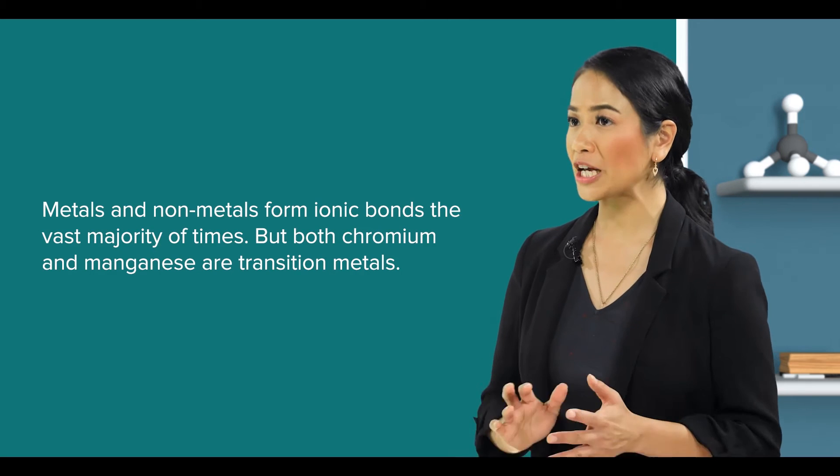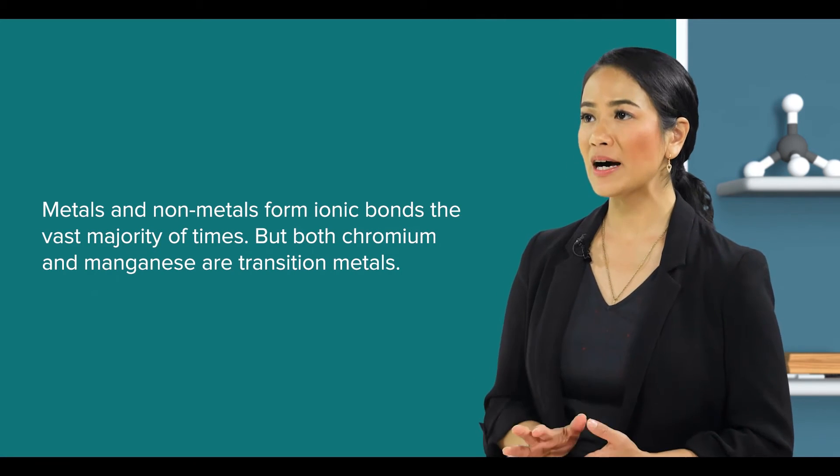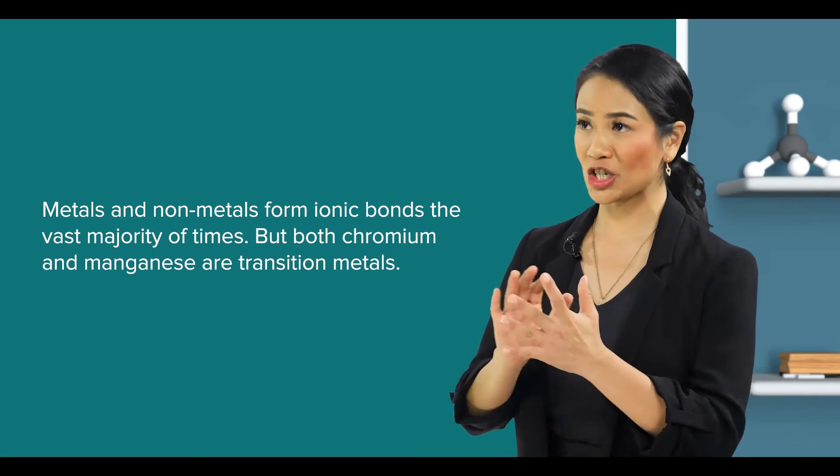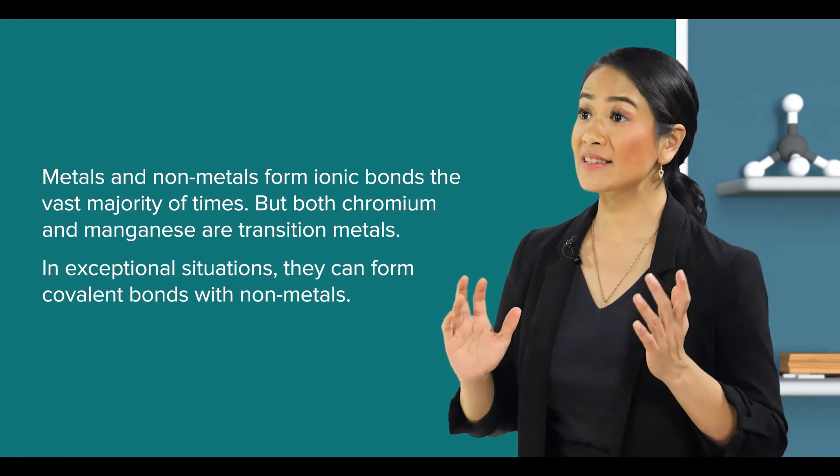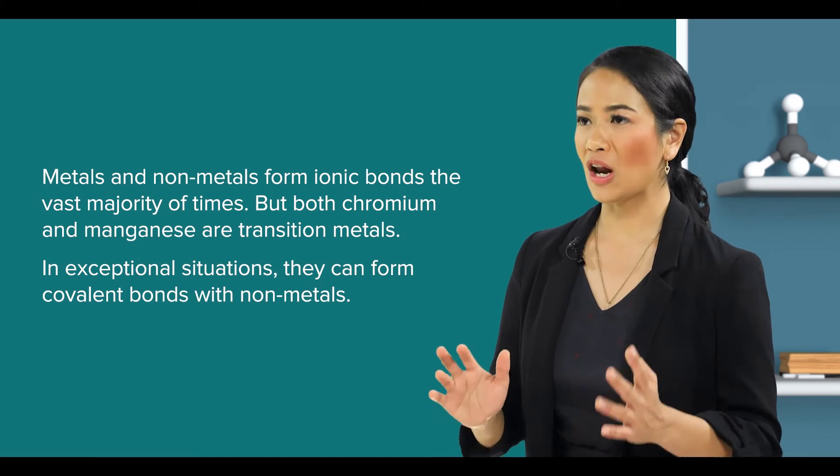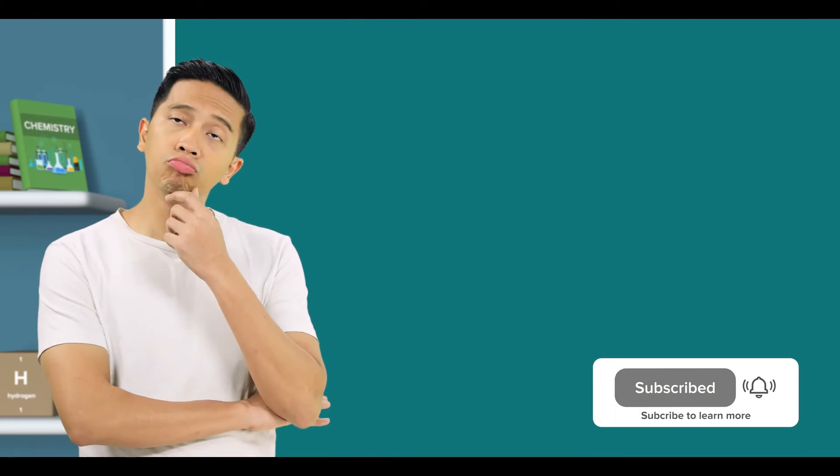It's true that metals and non-metals form ionic bonds the vast majority of times, but both chromium and manganese are transition metals, and in exceptional situations, they can form covalent bonds with non-metals. I see. Okay.